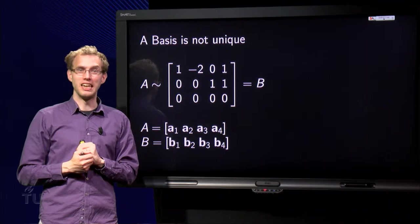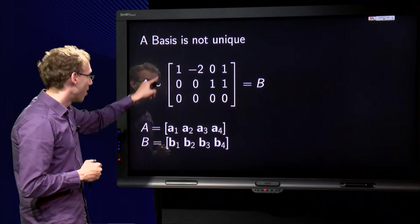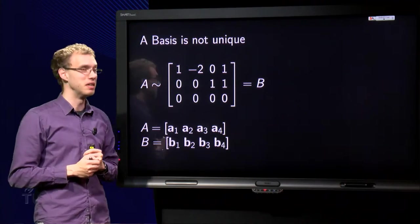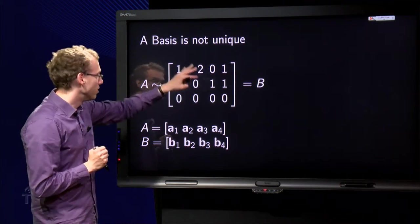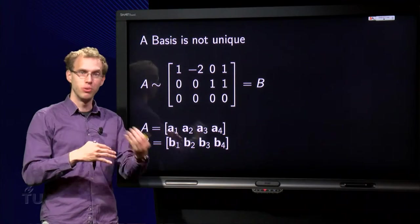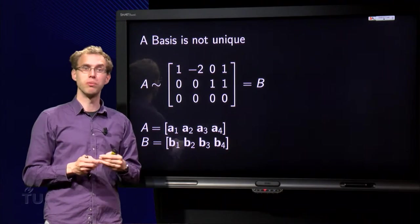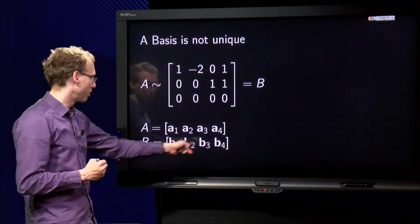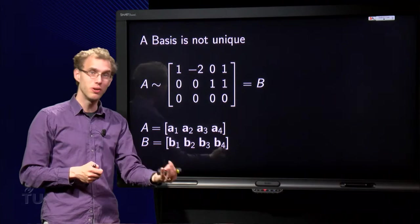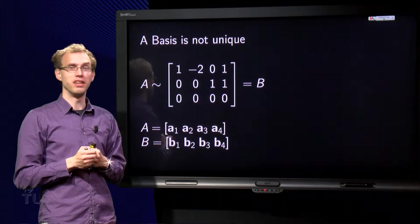We have a matrix A, or rather we do not have a matrix A. We only have the reduced echelon form of A, and that is called matrix B. So we do not know what matrix A is, but we do know what matrix B is. B has 4 columns—if you do row reduction the number of columns doesn't change. So A has also 4 columns: A1 up to A4. B consists of B1 up to B4. We know B1 up to B4, but we do not know A1 up to A4. Can we still find the basis for col A?